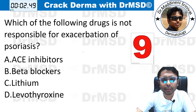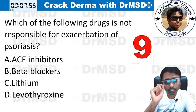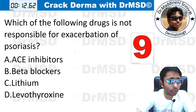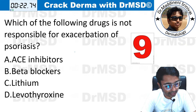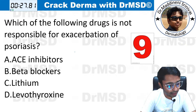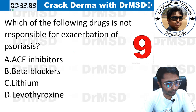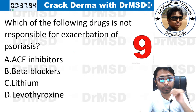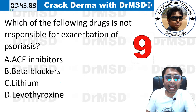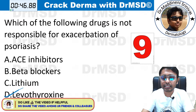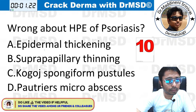Question number nine — a memory-based question, 30 seconds. Which of the following drugs is NOT responsible for exacerbation of psoriasis? Is it ACE inhibitors, beta blockers, lithium, or levothyroxine? Some students answered option B. If you have not heard the mnemonic, you may be confused. The answer for this question is option D — levothyroxine. I will tell the mnemonic during the explanatory part.